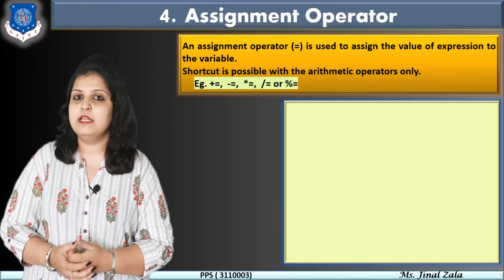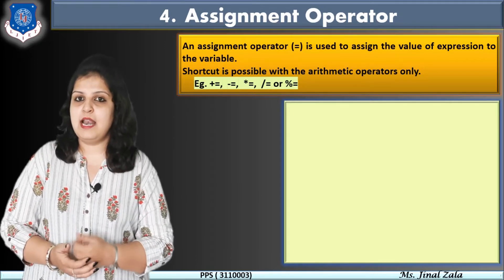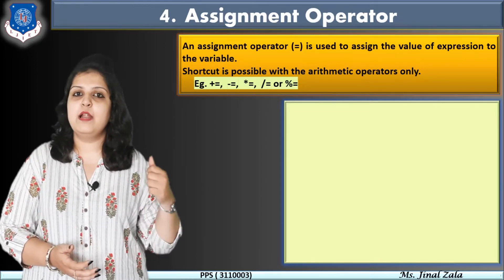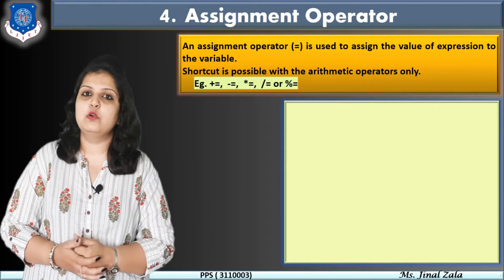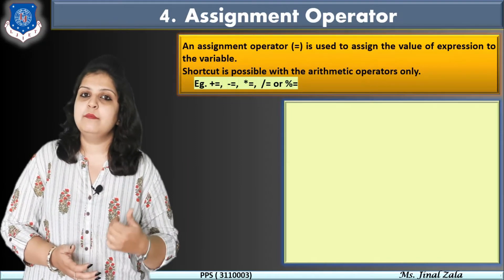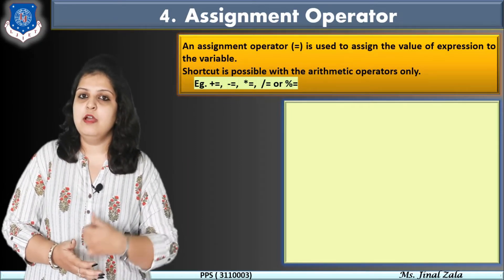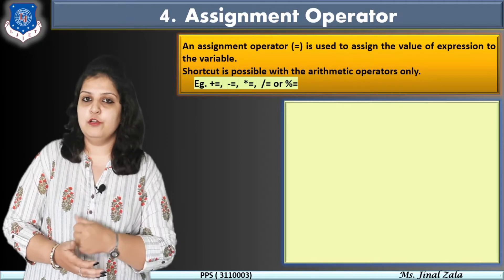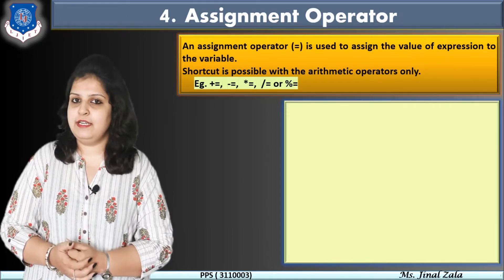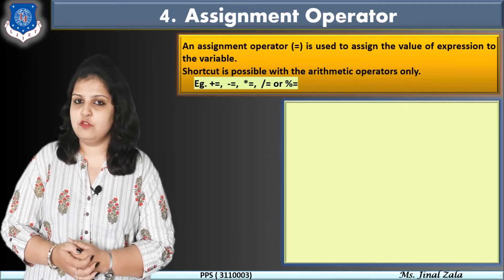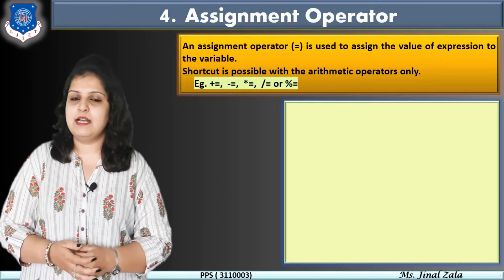In C programming, using the assignment operator we can perform some shorthand operations like += (plus equal to), -= (minus equal to), *= (multiplication equal to), /= (division equal to), and %= (modulo equal to).